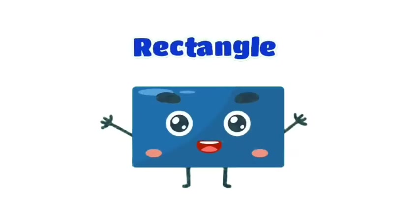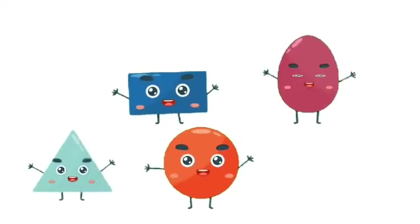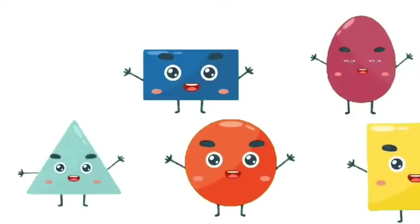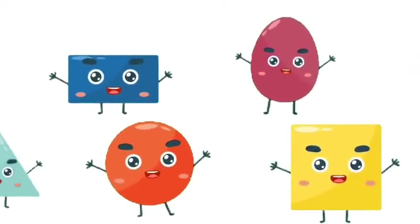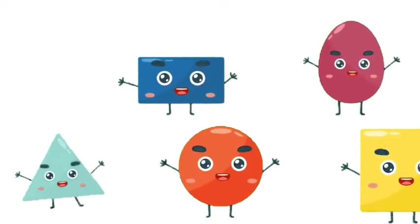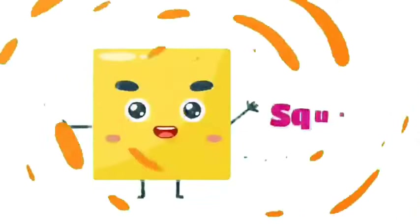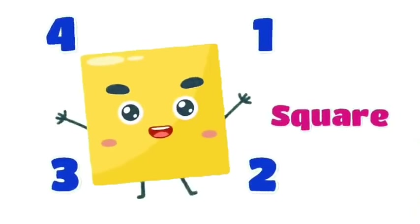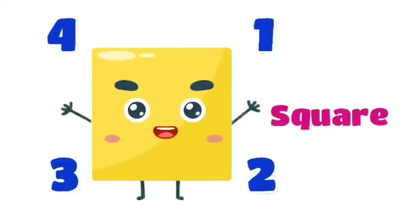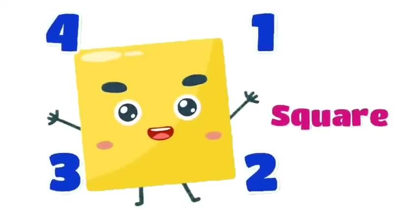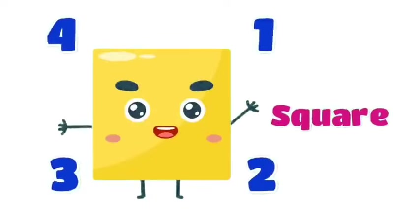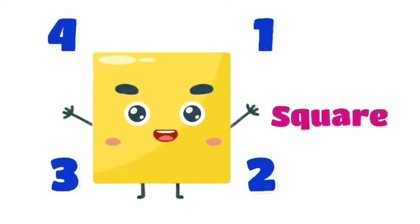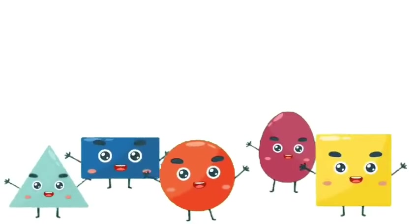Triangle, rectangle, circle, oval, square. I'm a four-sided square, shaped like a box. I'm a four-sided square, shaped like a box. Shaped like a box, shaped like a box. I'm a four-sided square, and all four sides are the same.